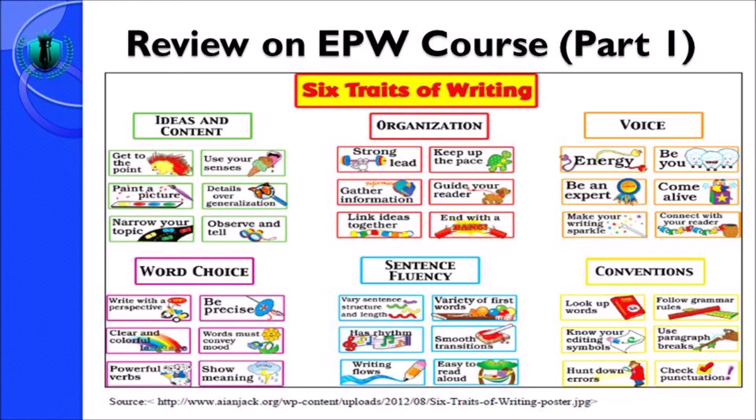As you can see in the slide, in terms of ideas and content, we have six items: you should get to the point, use your senses, state details over generalization, describe or state your ideas as if you paint a picture, narrow your topic, and observe and tell. In terms of organization, you have to have a strong lead in your first sentence.